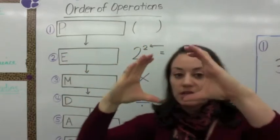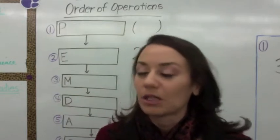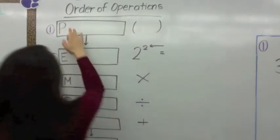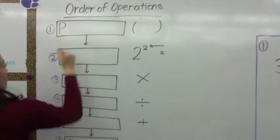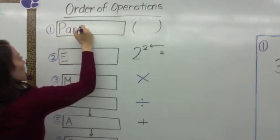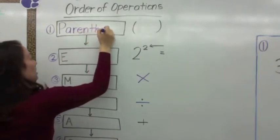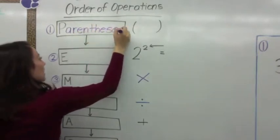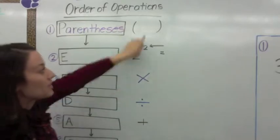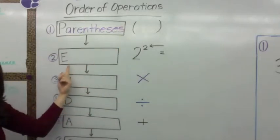The first thing you're going to do is look to see if you have parentheses. Hold up your hands and say parentheses. So the first step you're going to write in your flow map is parentheses — P-A-R-E-N-T-H-E-S-E-S. Parentheses look like this.